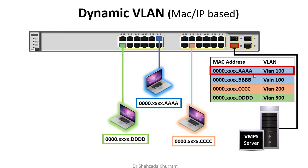Jo large network hota hai — more than 100 switches — usmein yeh sabse better solution hota hai. Pehli baar hume thodi si configuration karni padti hai, database ke andar saari entries daalni padti hain, phir isko switches ke saath connect kar lete hain. Jaise hi koi connect karta hai, us port ko detect karke usko woh VLAN assign ho jaati hai, aur is tarah management bhi easy ho jaati hai.